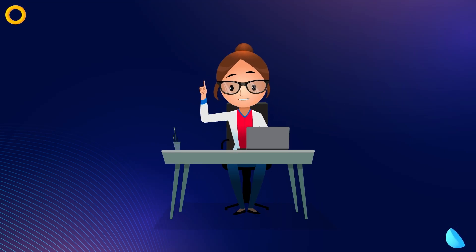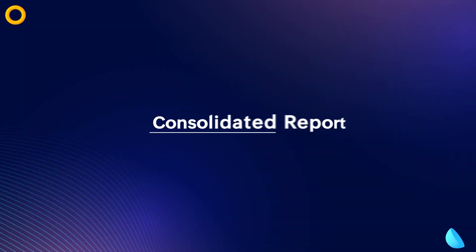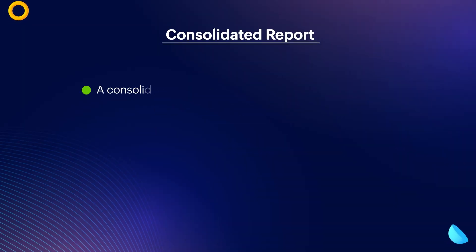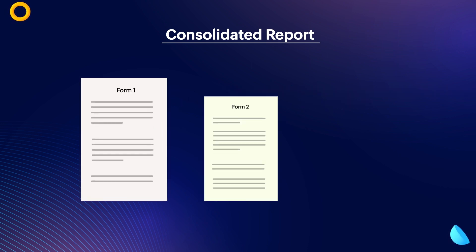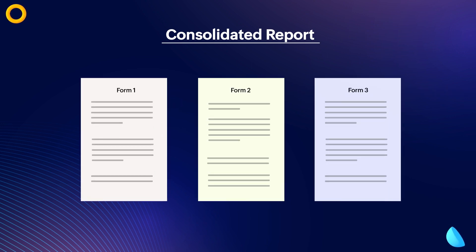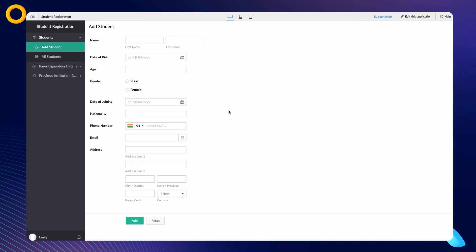Hello everyone! In this video, we'll learn how to create a multi-step form and a consolidated report. A consolidated report displays the data from all the forms in a single view. This can be useful when you need to collect data from different forms and want to see all the data in a single report. In this demonstration, we'll create a multi-step student registration form and a consolidated report.